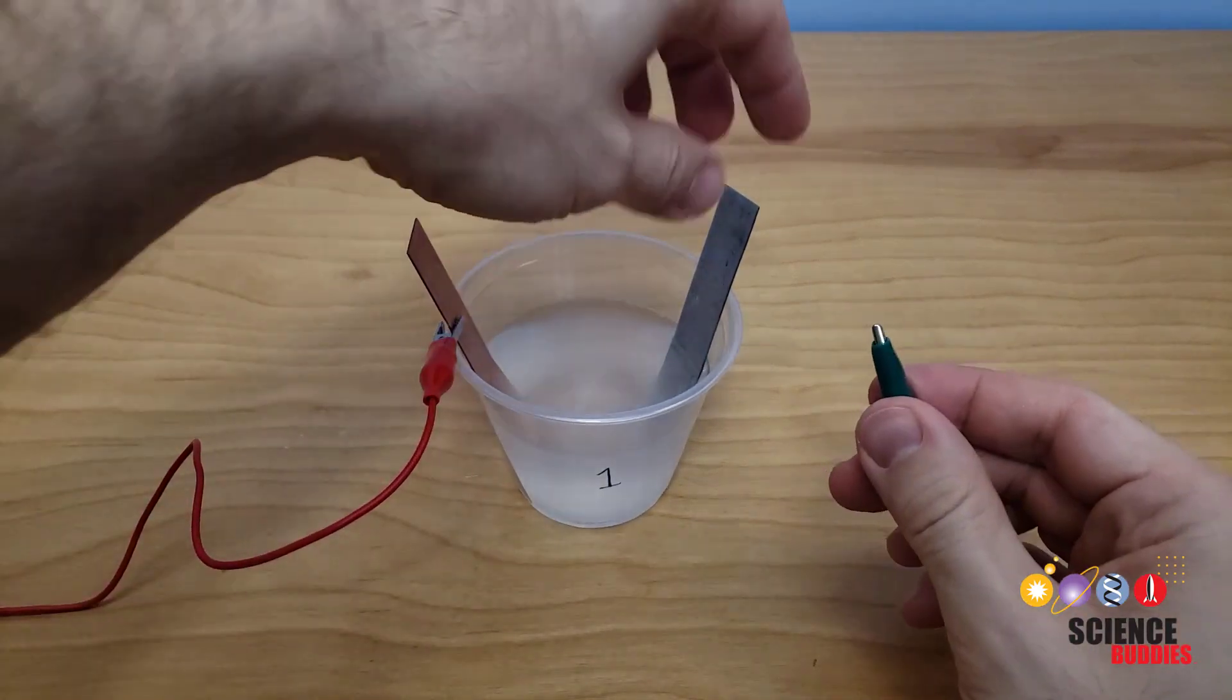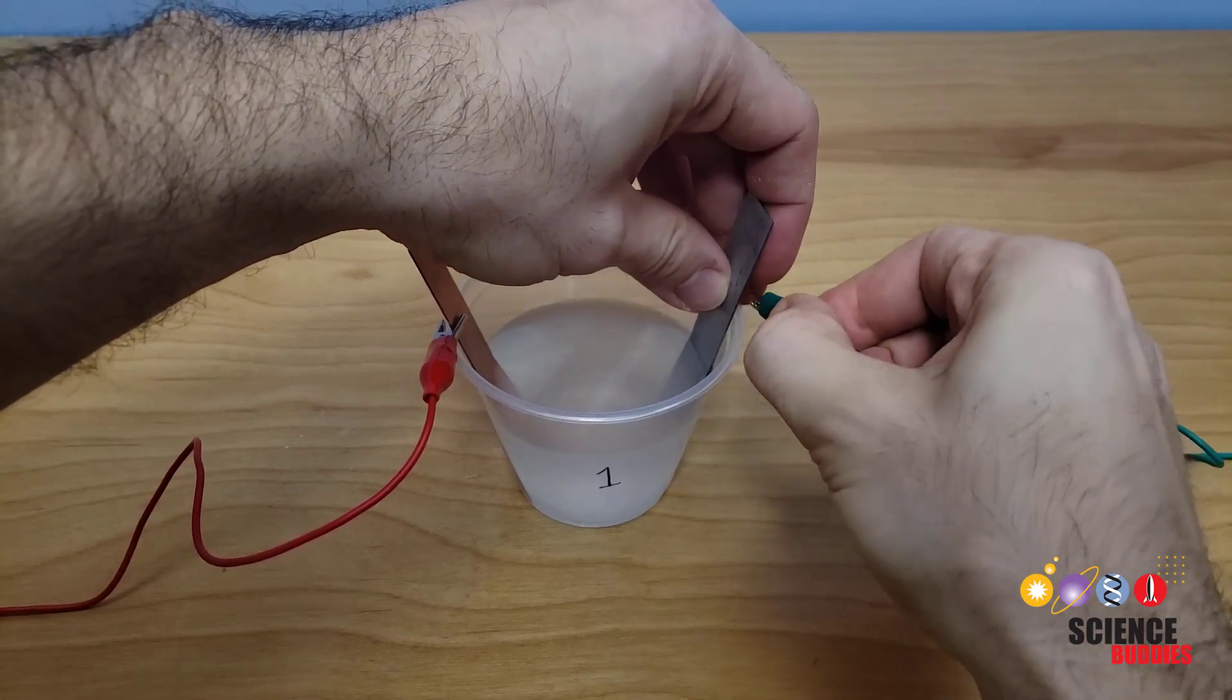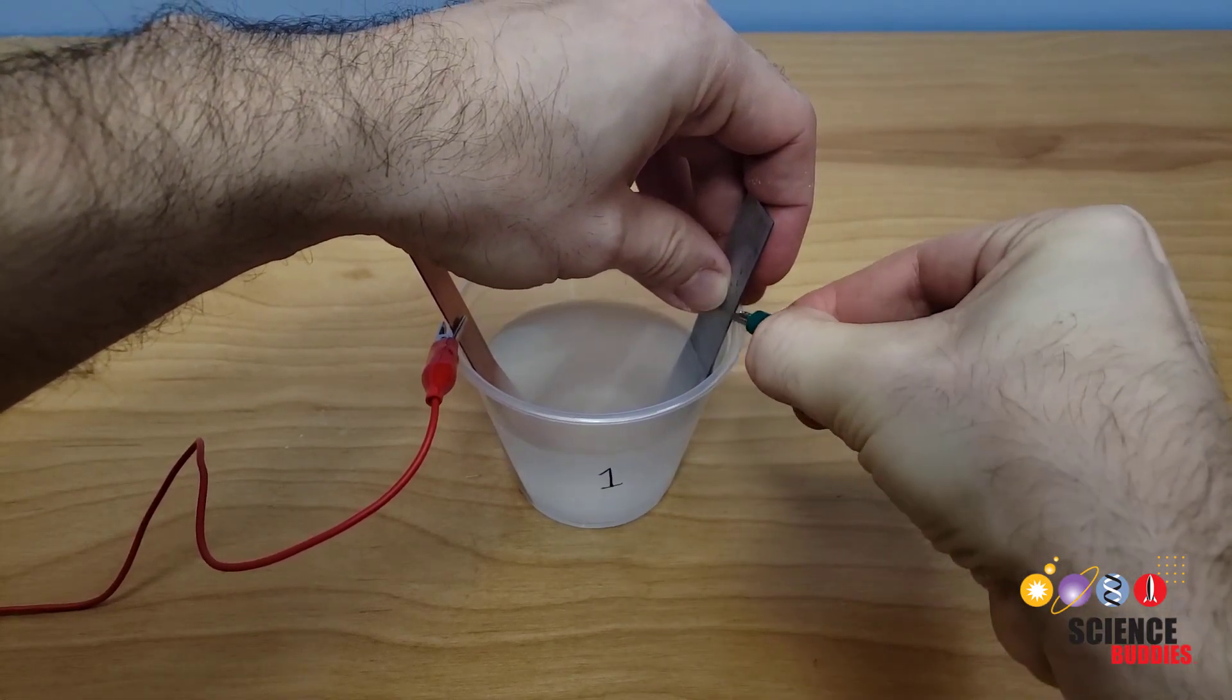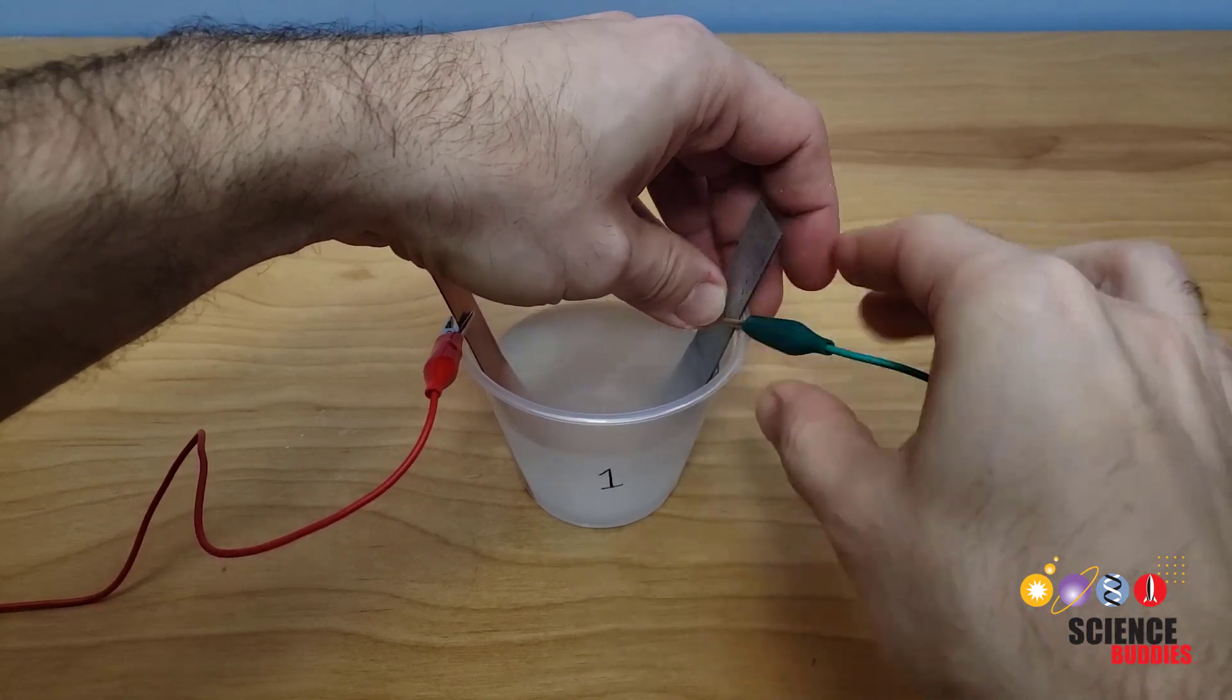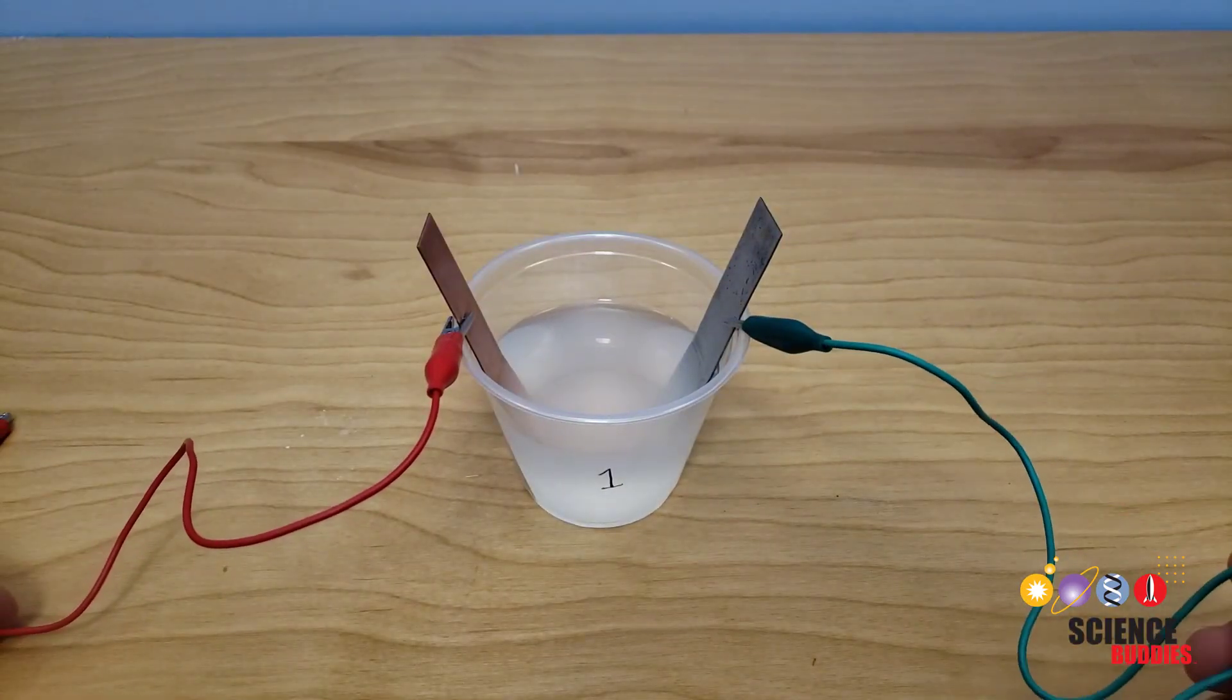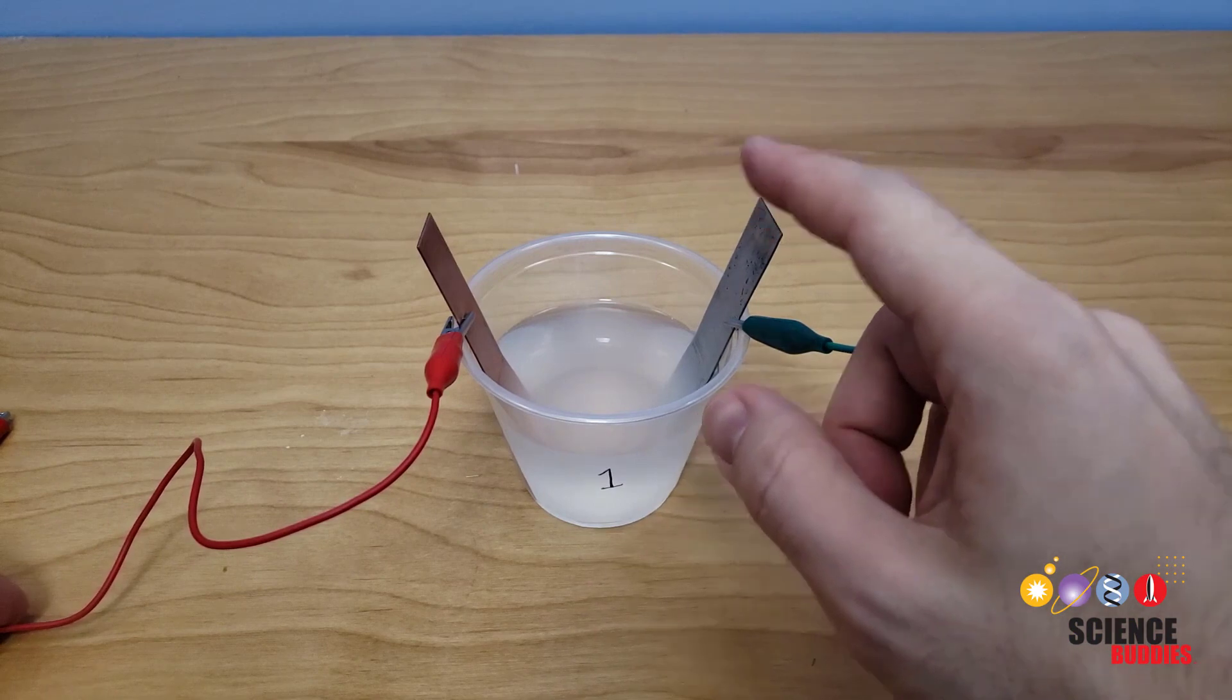Note that there is no functional difference between alligator clips with different colors, they just make color coding a circuit easier. So for example, if your kit comes with a black alligator clip instead of a green alligator clip, that is fine. Just connect the black one to the zinc.